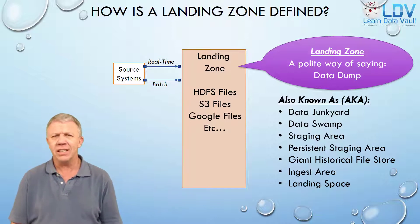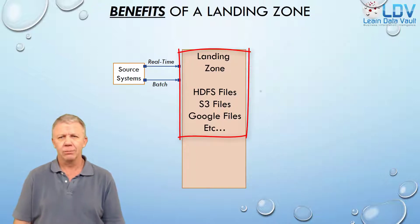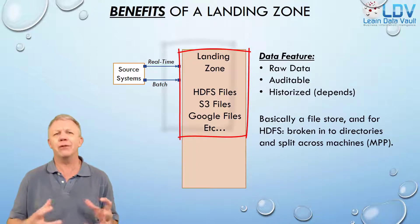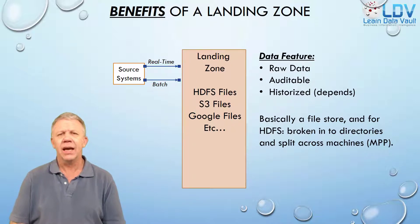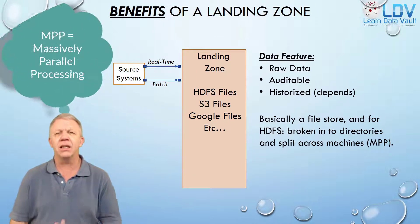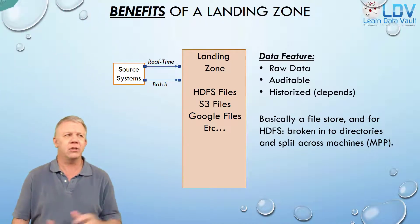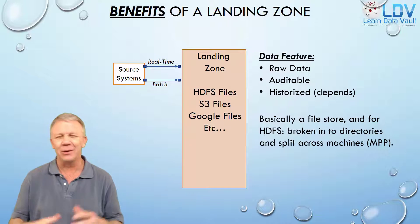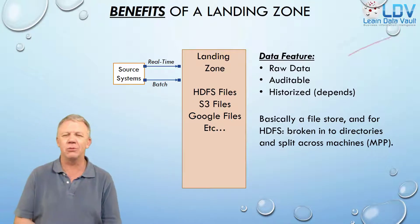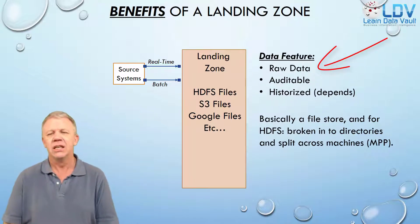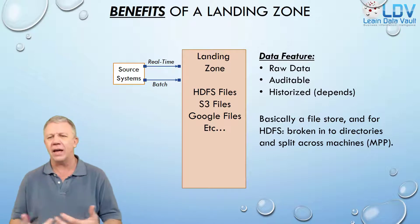What essentially is this thing? A landing zone is essentially a file store — one gigantic big file store sitting in HDFS or the Hadoop file system, divided up with MPP, at least as far as Hadoop goes. In S3, it's just a gigantic file store. It contains raw data — whatever file you dump in there is what it has.